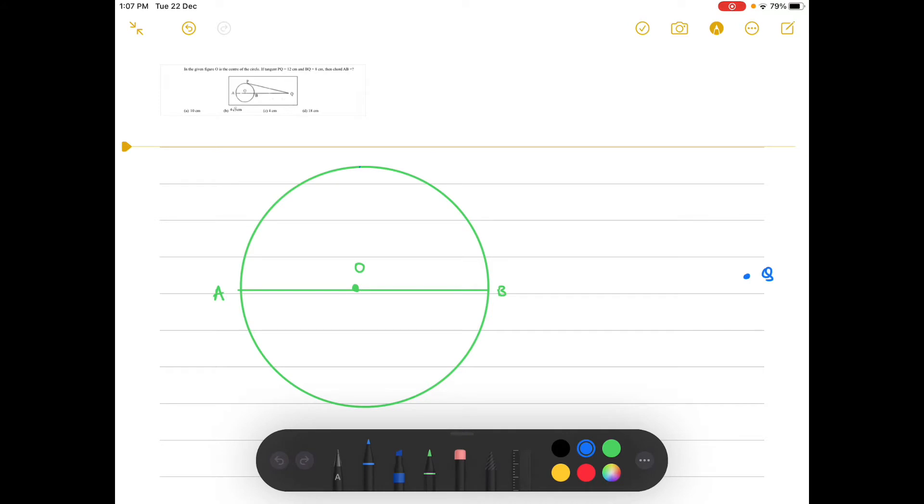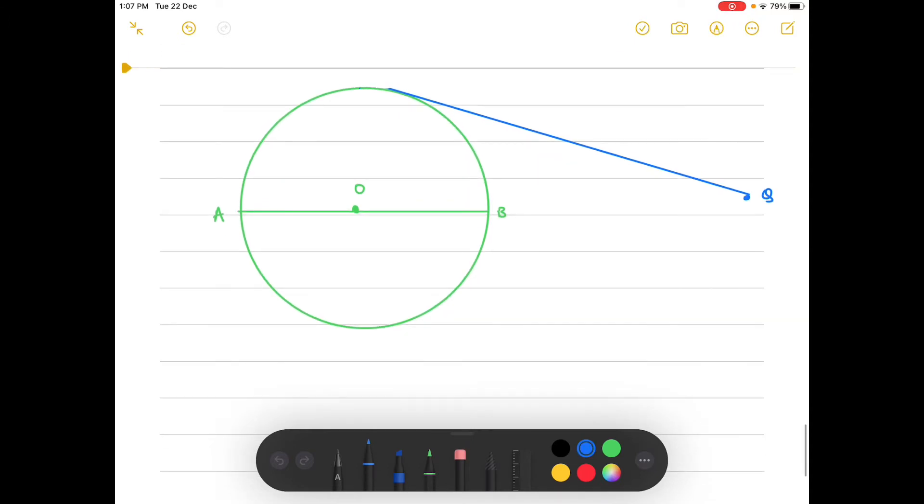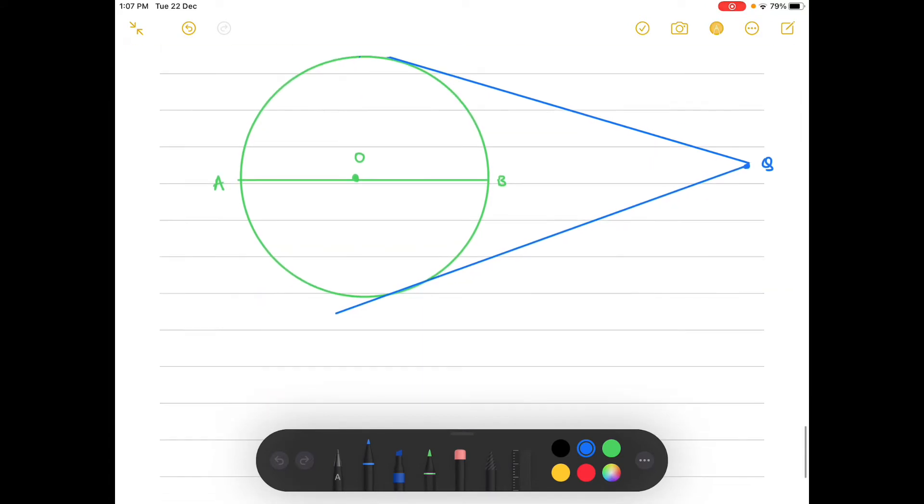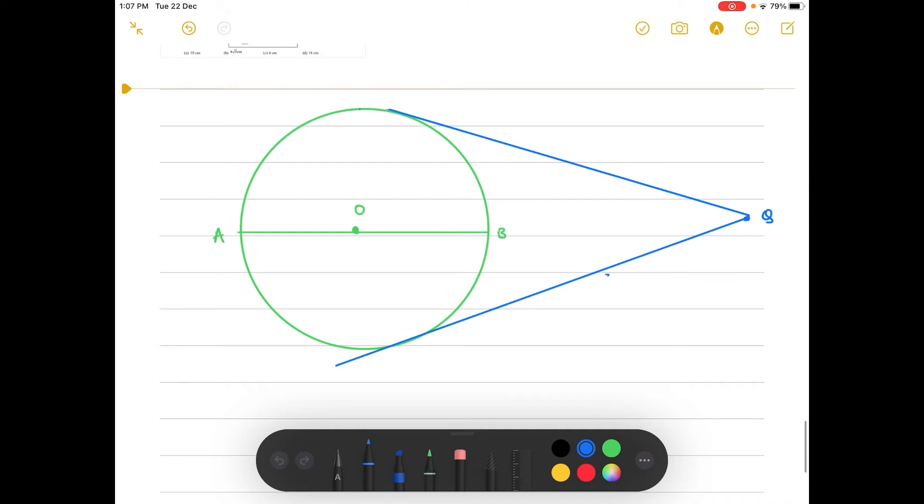Now drawing the tangents, here is the point Q, and from here there are two tangents. They have given us one tangent but we can draw another tangent from this point itself. Even though it is not needed to draw this tangent, we can still draw it for clarification.